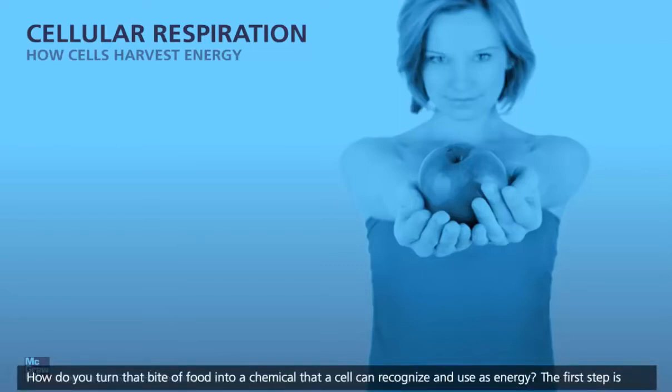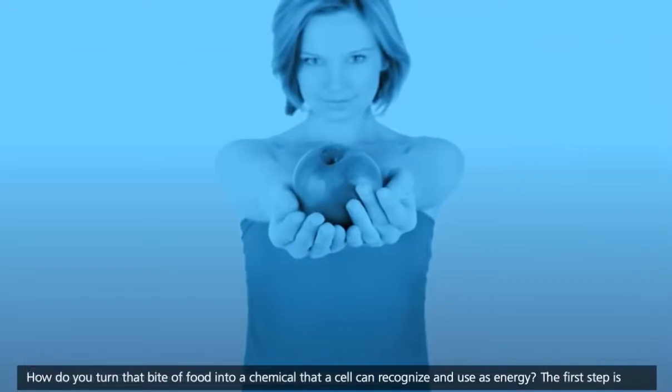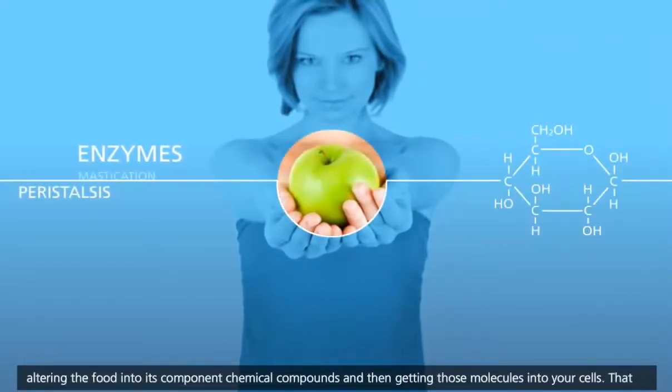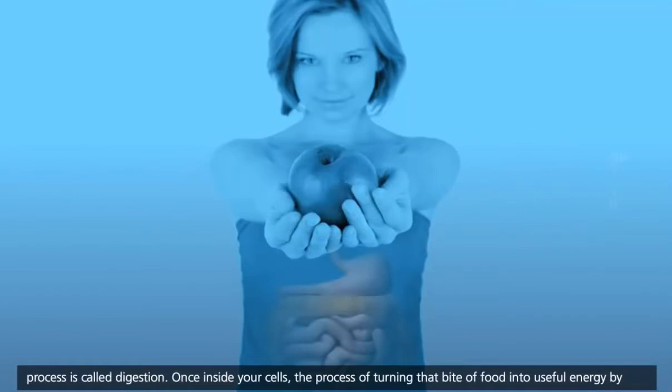How do you turn that bite of food into a chemical that a cell can recognize and use as energy? The first step is altering the food into its component chemical compounds and then getting those molecules into your cells. That process is called digestion.